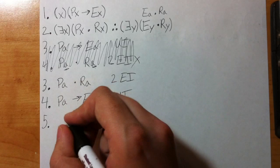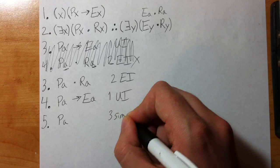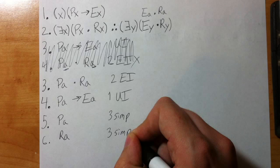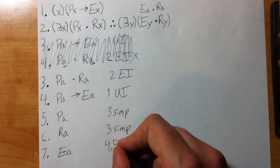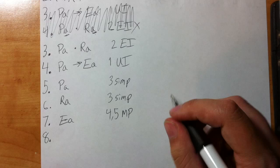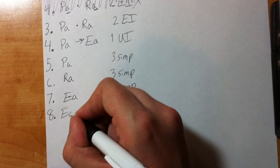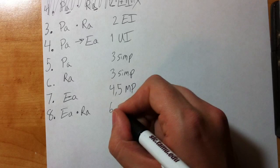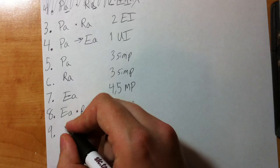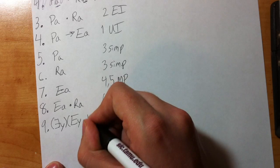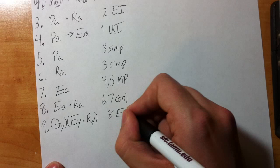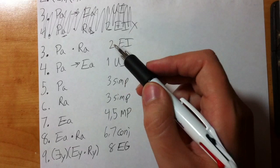So I'm gonna do simplification on line three. I always do simp twice—you never know when you might need it. Now Ea from lines four and five MP, and line eight. Remember thinking about that strategy, I've got all the pieces I need: Ea and Ra from lines six and seven, and that's conj. So now I can finish it off by using existential generalization or EG. I could pick x if I wanted to, but I choose to pick y because that's what's in my conclusion, and I just replace the letters. Line eight EG.